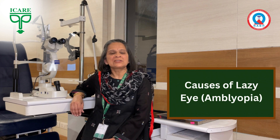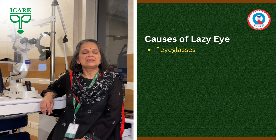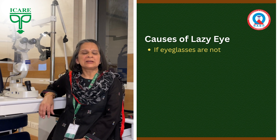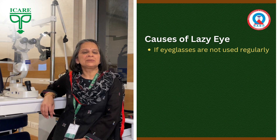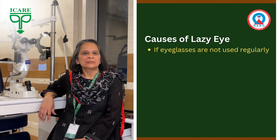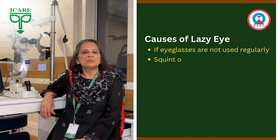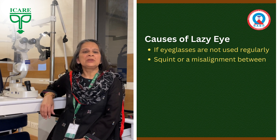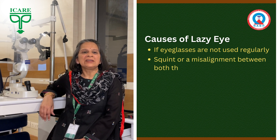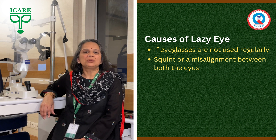The causes of this are many. One of the main causes is just eyeglass number or spectacle number — this could be a minus number, a plus number, or a cylindrical number — and it could occur in one or both of the eyes. The second most important cause of a lazy eye is a squint, or a misalignment between both the eyes.